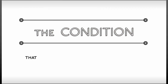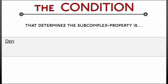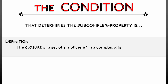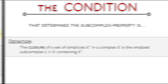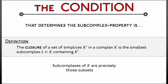That condition — being closed under the face relation — leads to a definition of closure. The closure of a set of simplices K′ in some simplicial complex K is the smallest subcomplex L that contains K′. So L is a subcomplex sandwiched between K′ and K. We add in all the simplices that make it into a subcomplex. This allows us to rethink subcomplexes as precisely those subsets of a simplicial complex that are equal to their closure.